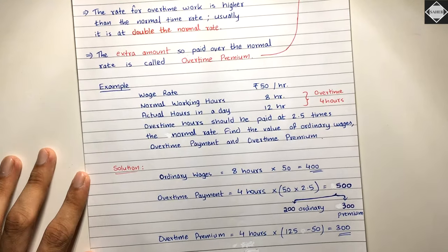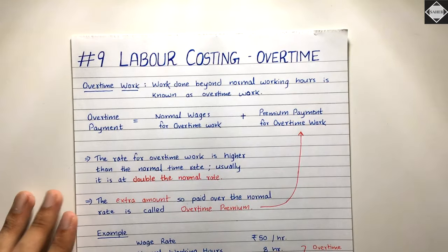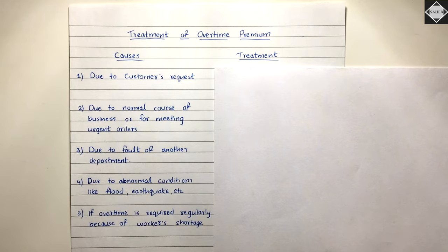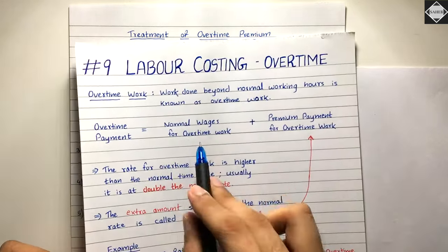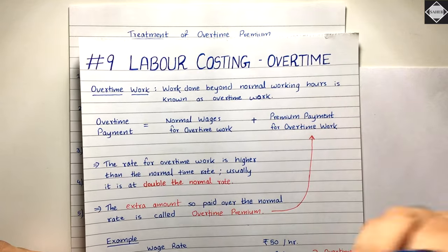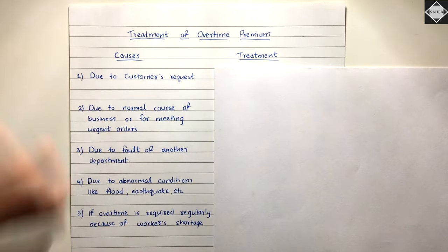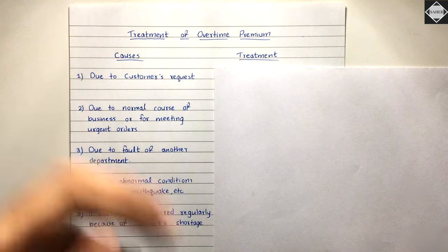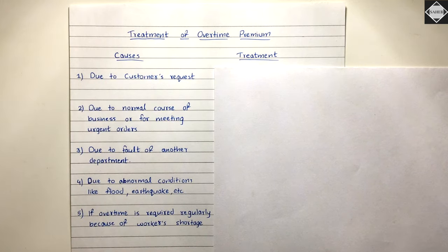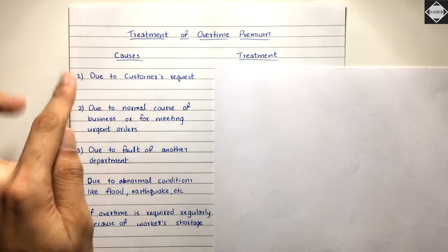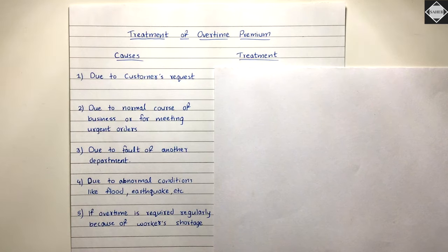Now let's look at the accounting treatment of overtime premium. We bifurcate overtime payment into two elements because the accounting treatment depends on the cause of the overtime — that is, why the company is making workers do overtime. Different causes have different accounting treatments. Let's examine each cause.